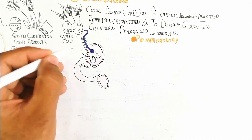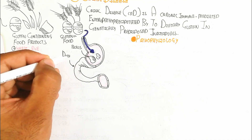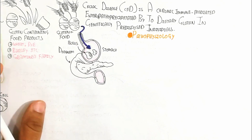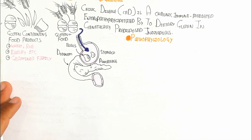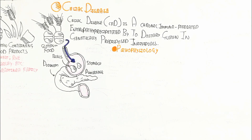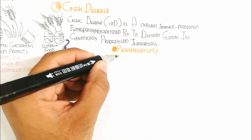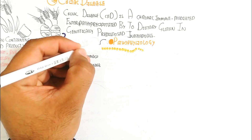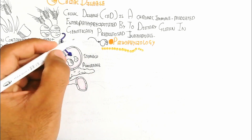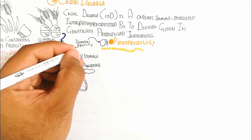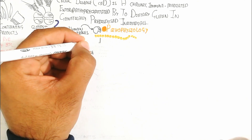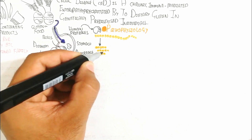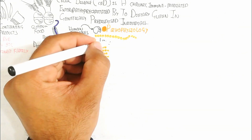Let's understand the pathophysiology. When gluten enters the stomach after eating, it passes into the duodenum. The gluten is a long polypeptide that is partially cut by human protease enzymes in the lumen of the small intestine — not completely digested.